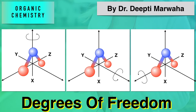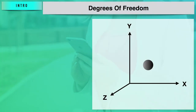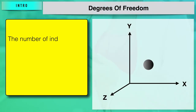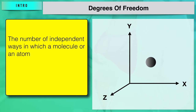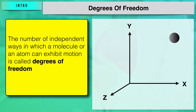Hello friends, let us understand what we mean by degrees of freedom. It is the number of independent ways in which a molecule or an atom can exhibit motion. To make it more clear, observe this image.